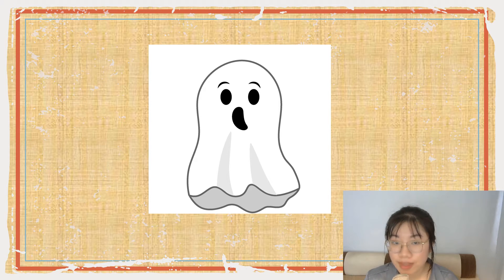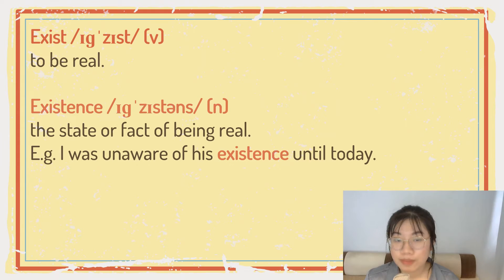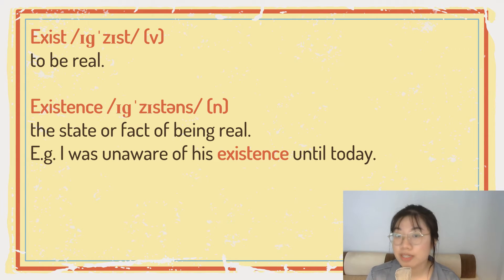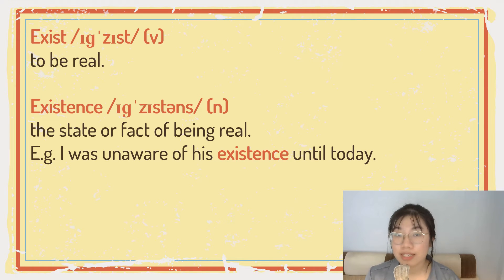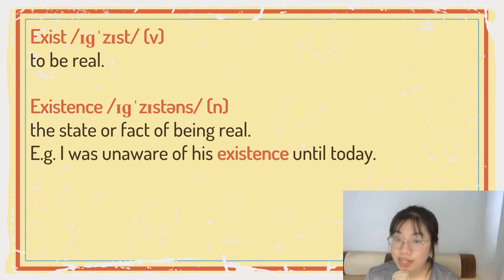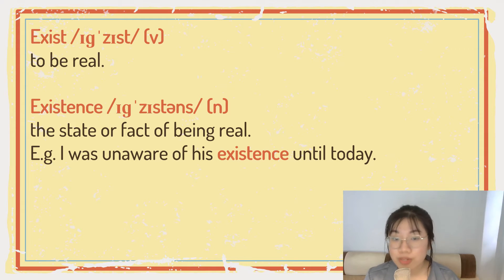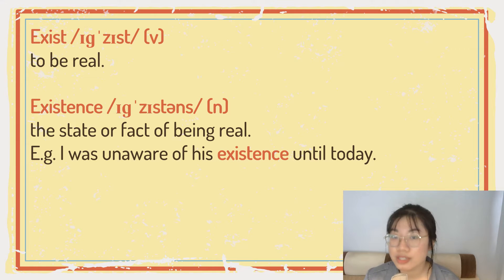Exist. So, we have the verb 'exist', which means to be real. And the noun form of 'exist' is 'existence' — the state or fact of being real. For example: I was unaware of his existence until today.